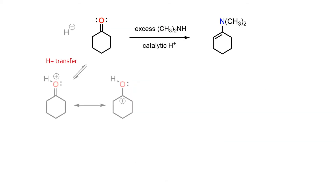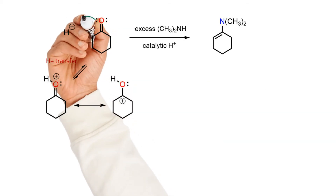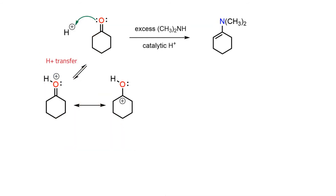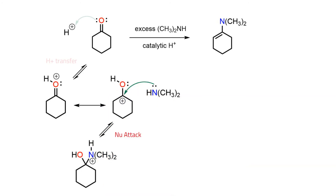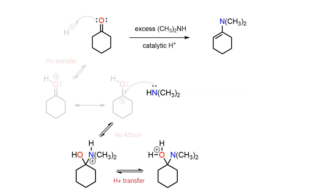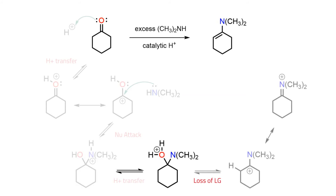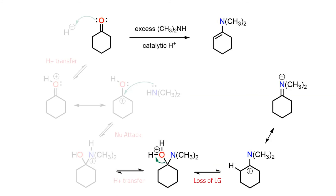The conversion begins with protonation of the carbonyl oxygen to give a highly activated electrophile. The nucleophilic amine then attacks the protonated electrophile to generate a protonated hemi-aminal. A reversible proton transfer then occurs to set up a very good water-leaving group, and loss of that leaving group gives a second resonance-stabilized carbocationic intermediate that has iminium ion characteristics.